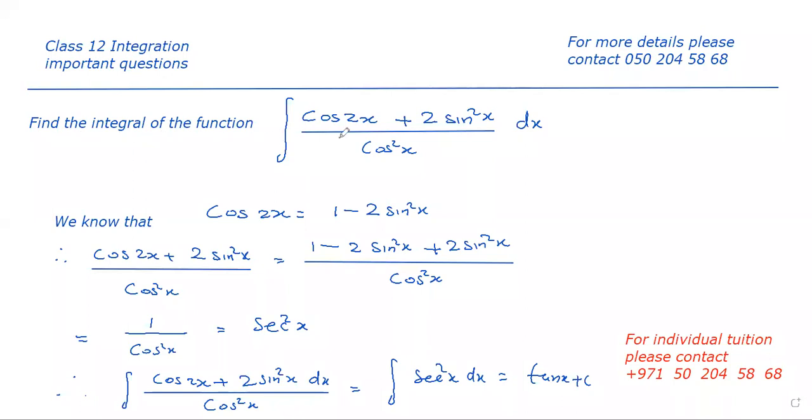To find the integral cos 2x plus 2 sin square x all divided by cos square x dx.